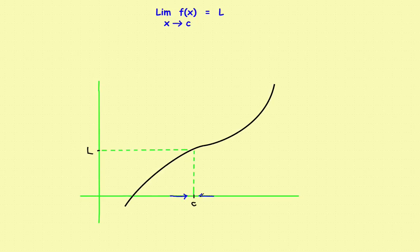which just means that as x approaches c from the left and from the right — so x is getting closer and closer to c — that f of x, the function, is approaching the number L. So as x gets closer and closer to c, these two blue arrowheads are coming, approaching each other at c. Then f of x is approaching L, so the two red arrowheads are approaching the single fixed number L. And if that's true, then the limit exists.